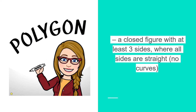First, let's talk about polygons. Remember, a polygon is a closed figure with at least three sides where all sides are straight — no curves. For example, a circle is not a polygon because it does not have any sides and it has curved lines.